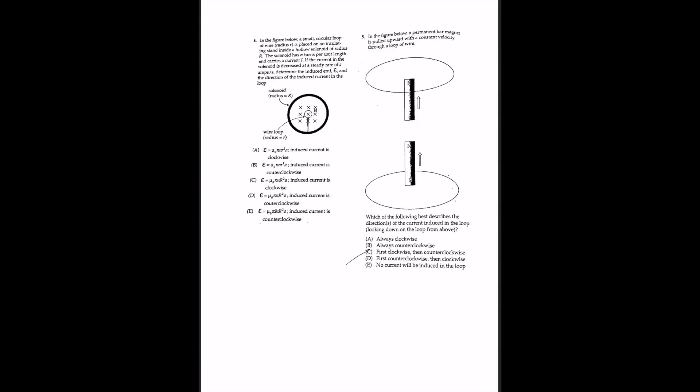For question 4, a small circular loop of wire of radius R is placed on an insulating stand inside a hollow solenoid of radius R, with n turns per unit length carrying current I. The magnetic field through the loop is mu-naught·n·I. The area of the small loop is pi·R², so the magnetic flux through the loop is phi_B = mu-naught·n·I·pi·R².